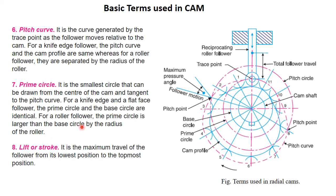The pitch curve is the curve generated by the trace point as the follower moves relative to the cam. We have already seen the pitch curve, which is the curve traced by the trace point. The prime circle is the circle drawn from the trace point to the center of the cam.